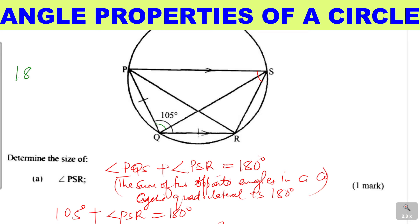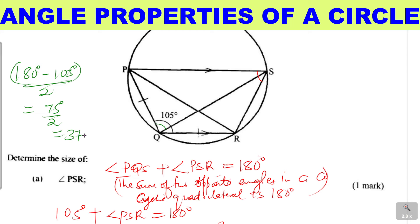We take 180 degrees then subtract 105 degrees. These are the two remaining angles of the triangle, and because they are equal, we divide by two: 75 divided by 2 gives 37.5. So each base angle — angle QPR and angle QRP — is 37.5 degrees.